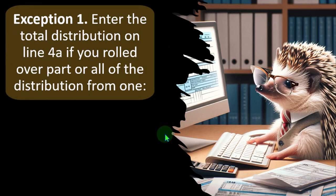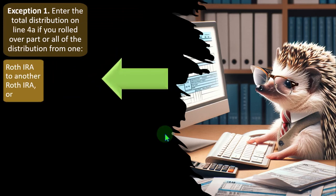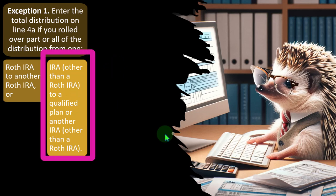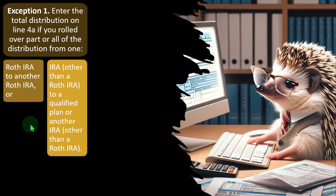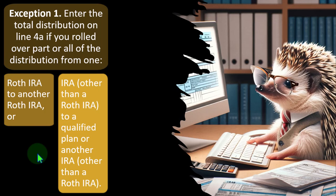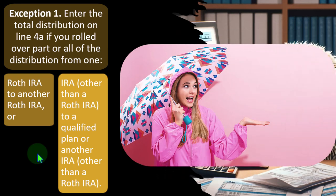Exception one: enter the total distribution on line 4A if you rolled over part or all of the distribution from a Roth IRA to another Roth IRA, or from an IRA other than a Roth IRA to a qualified plan or another IRA other than a Roth IRA. If you get a 1099-R, you're restricted from taking the money out of an IRA until retirement. If you take money out sooner, not only will you be subject to tax, but you could be hit with a penalty as well.